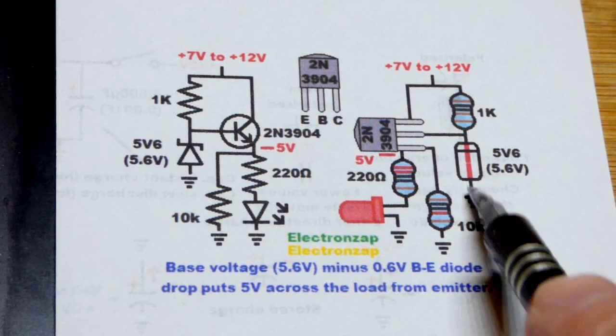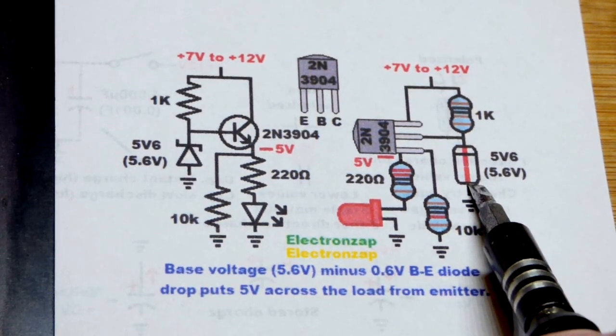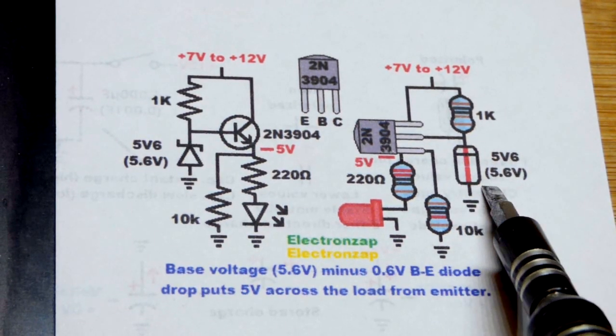So now in this video, we want to set a voltage across a load by using a Zener diode. That's the easiest way to get a steady voltage.